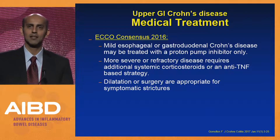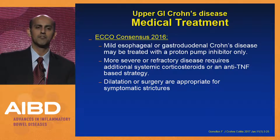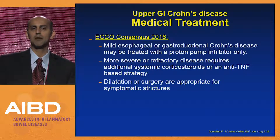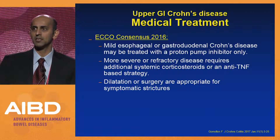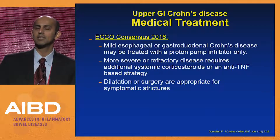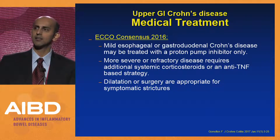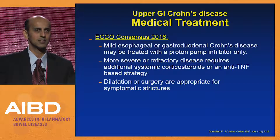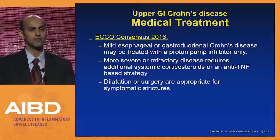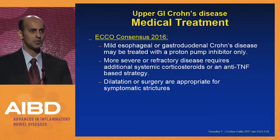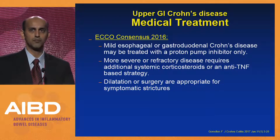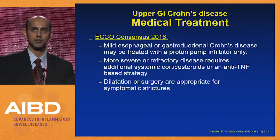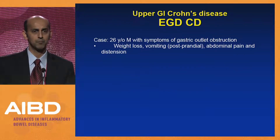Many patients can present with symptomatic strictures. Unlike in the small intestine or colon, surgical treatment for upper GI strictures is very challenging given the location. Therefore, endoscopic dilation is often the therapy of choice for stricturing upper GI Crohn's.